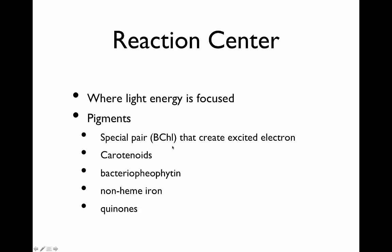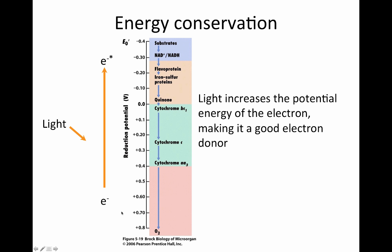The reaction center is where the light energy is focused. You have a whole bunch of different pigments: the special pairs of bacterial chlorophyll or chlorophyll, carotenoids, bacteriopheophytin, non-heme iron, and quinones. Light boosts the electron energy. You begin with a low energy electron from your electron source; light then boosts that energy so the electron can travel down the electron transport chain. Light increases the potential energy of the electron, making it a good electron donor.